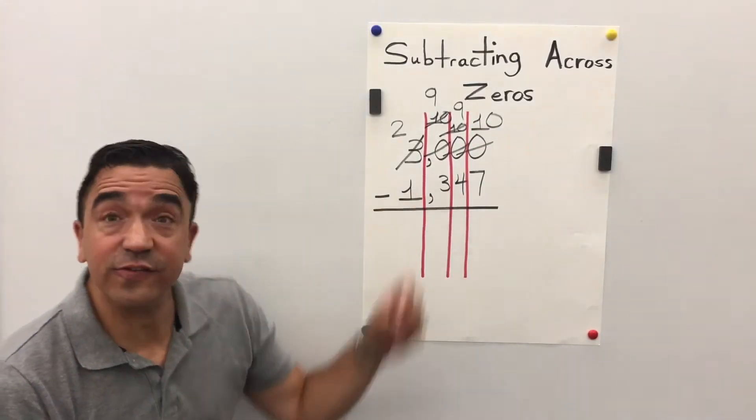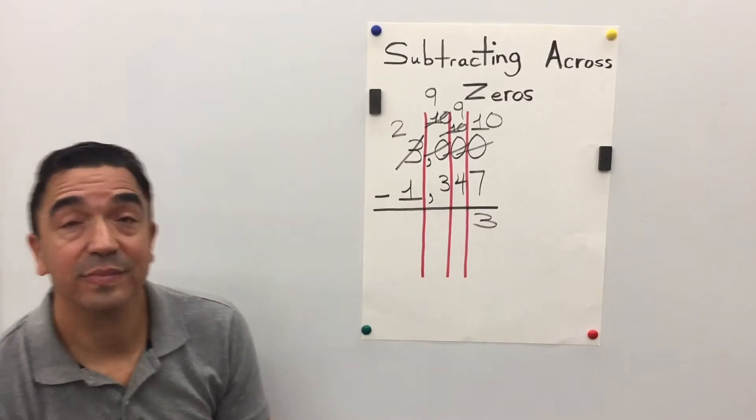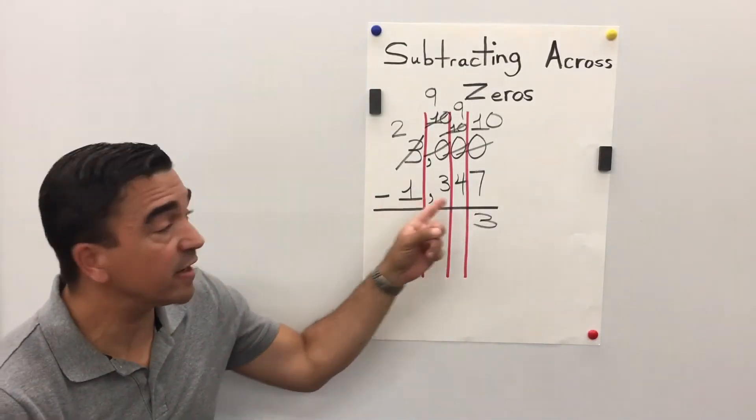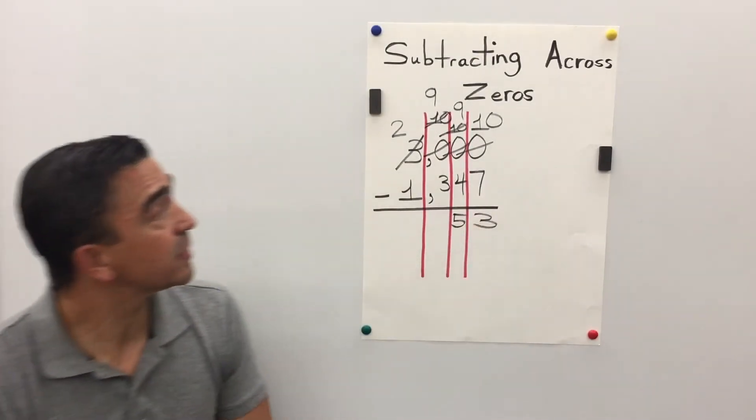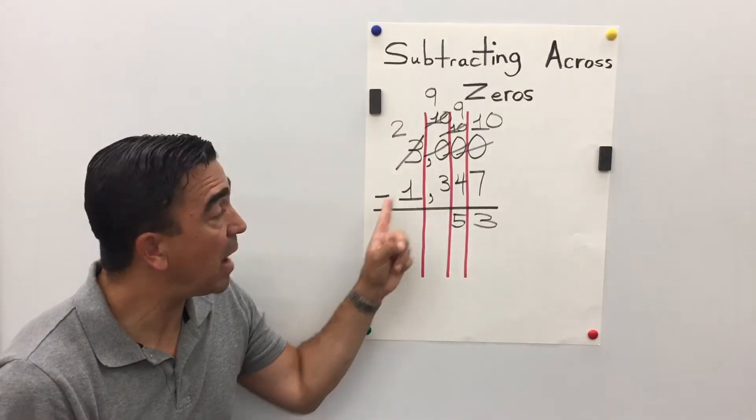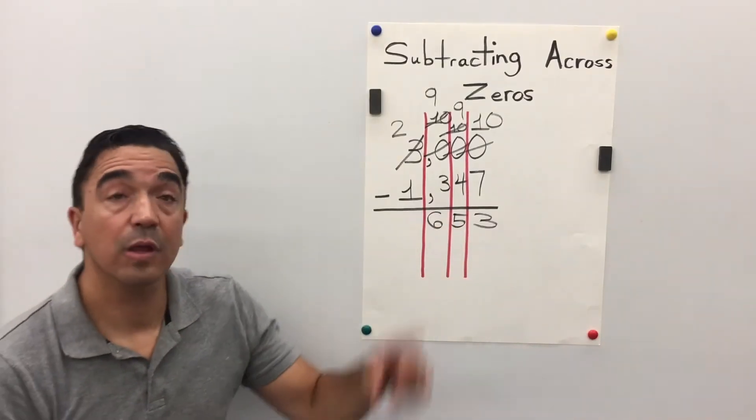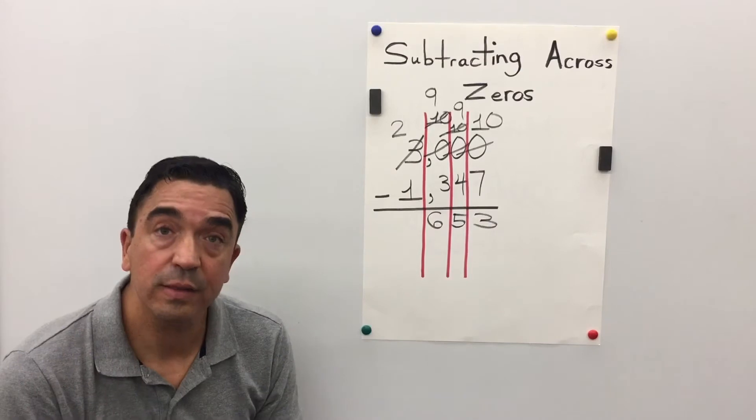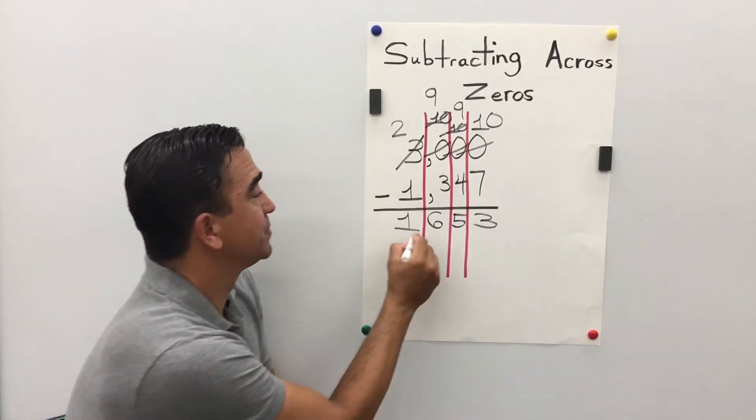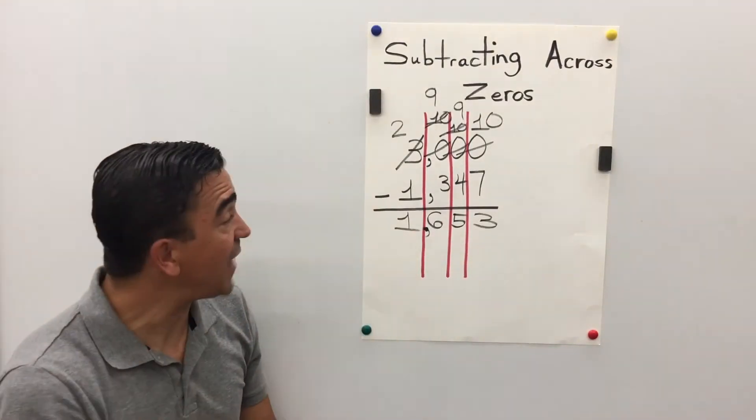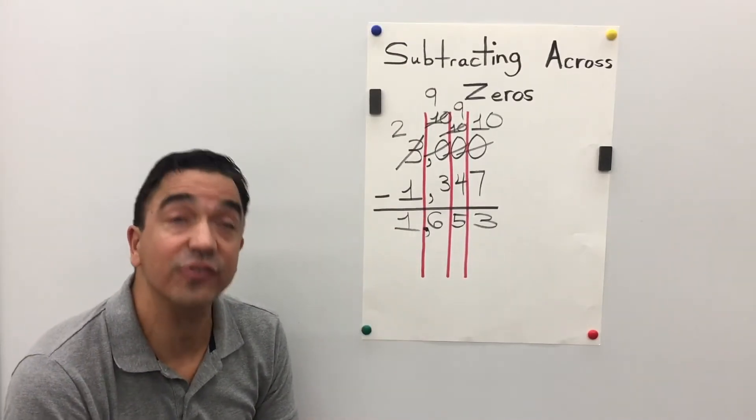10 minus 7 is 3. 9 minus 4 is 5. 9 minus 3 is 6. 2 minus 1 is 1. And I'm not gonna forget my comma. So, 3,000 minus 1,347 is 1,653.